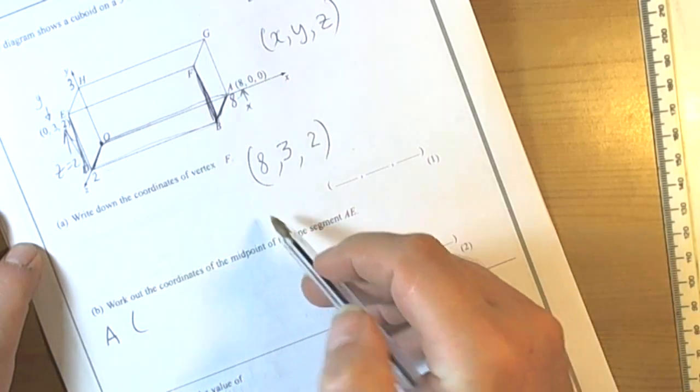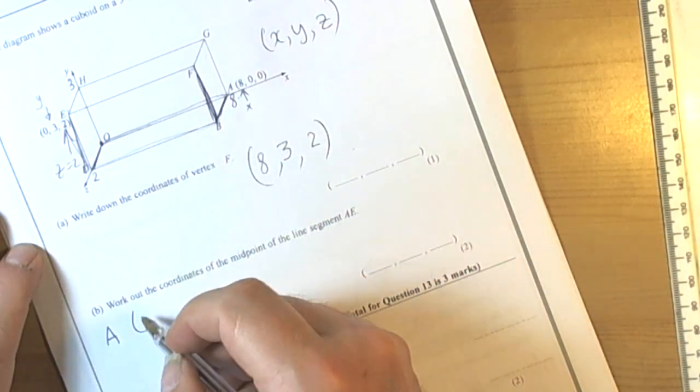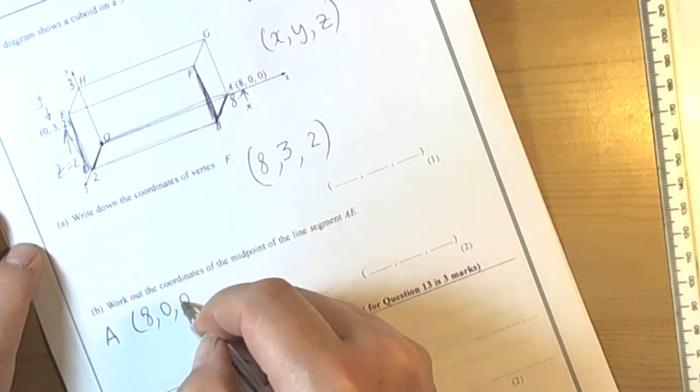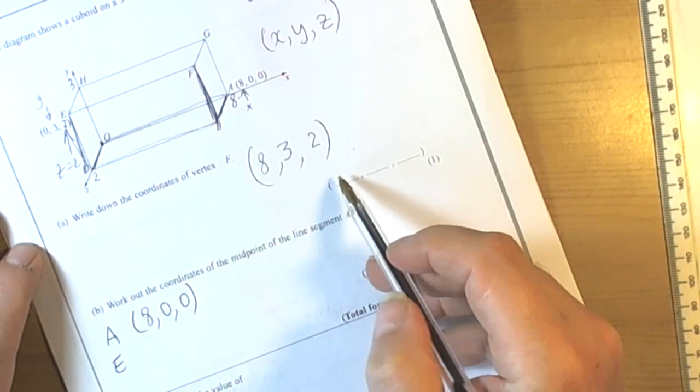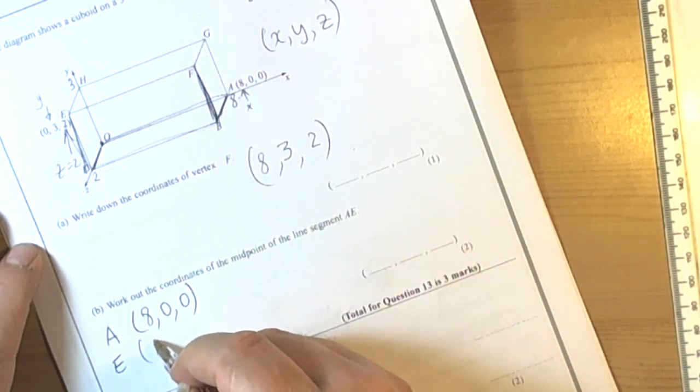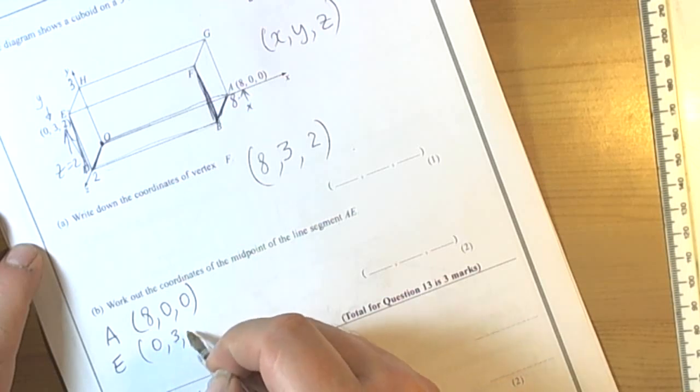so A has coordinates, well let's see what the journey is to A, well they've already told us it's 8, 0, 0. And E has coordinates, well again they've been generous they've just told us it's 0, 3, 2.